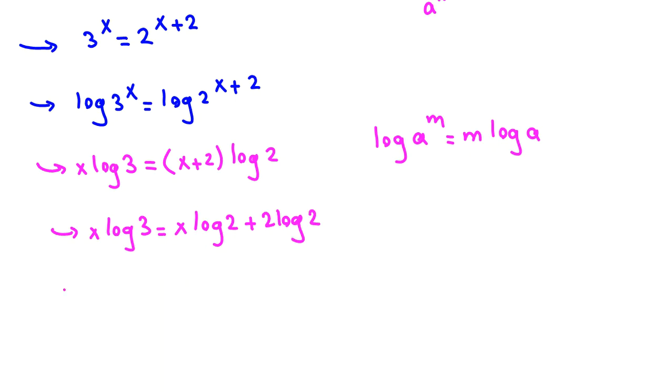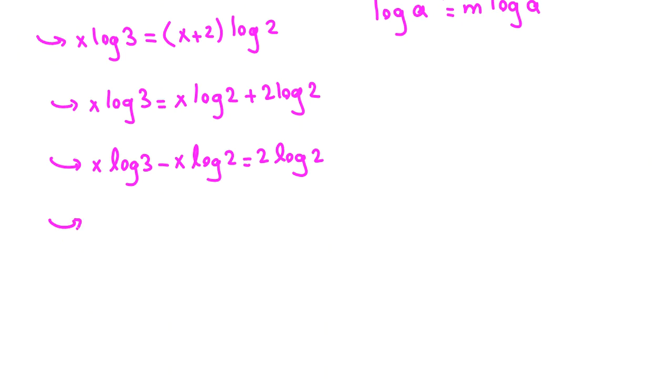Now we take this to the left-hand side, so x log 3 minus x log 2 equals 2 log 2. Now here, if we factor from x, it will be x times (log 3 minus log 2) equals 2 log 2.